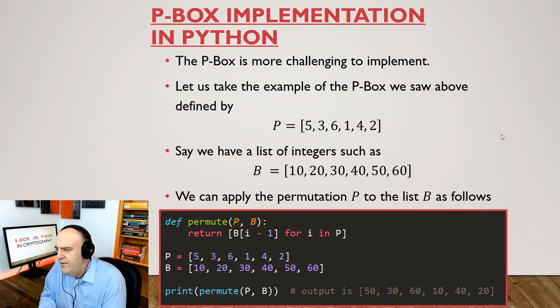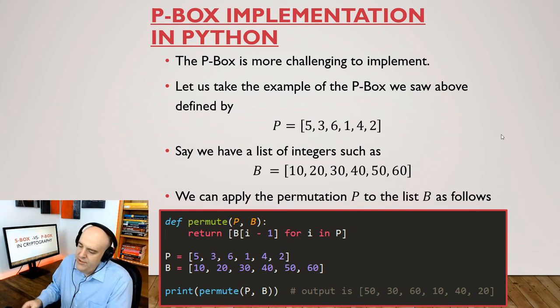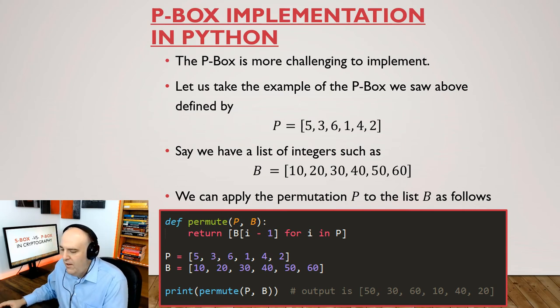So the P-Box is a little more challenging to implement. Let's just take the P-Box we saw above there, which is described by that list, 536142. Let's just say we have a random list of integers that has the same number of values as the N, which is 6 in this case. So let's just imagine we have B and it's 6 numbers. Why don't we just say 20, 10, 20, 30 up to 60. Then we can apply the permutation P to the list B as follows. We just use this notation here for constructing a list. We're going to range a variable I through the permutation list. And then we decrement it by one because notice we're counting by one here, but in order to access the array or the list, we need to start at zero. That's why we have I minus one here. And then we just find the B value associated to that index.